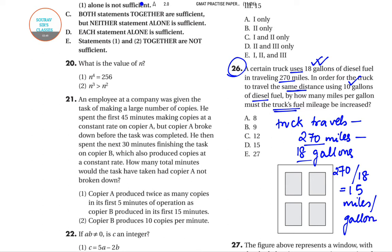Now, you need to travel the same distance on 10 gallons. Then it would need to get 27 miles per gallon. That means you require 27, initially you had 15, so you require 12 more. The truck fuel mileage should be increased by 12 more units. That means C will be the correct option to this particular question.